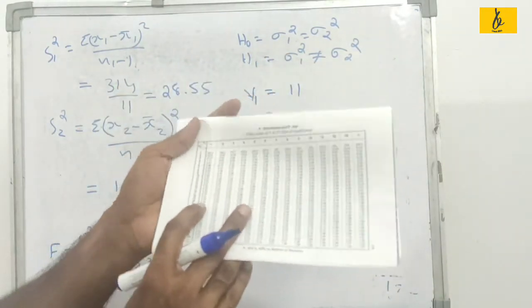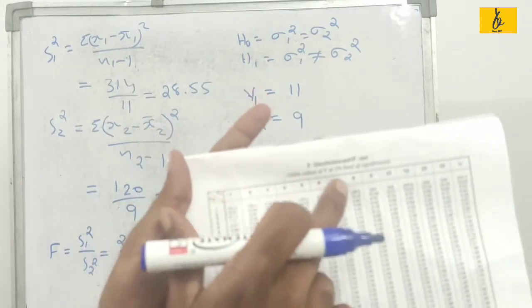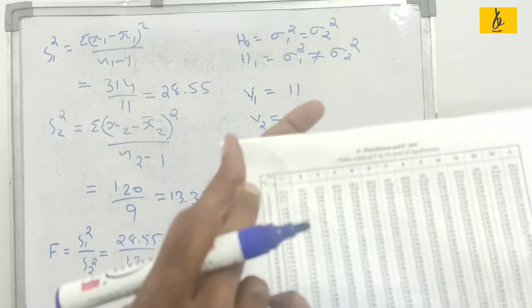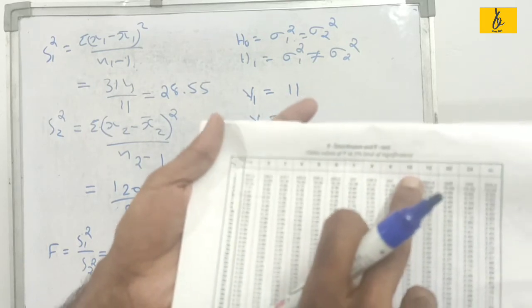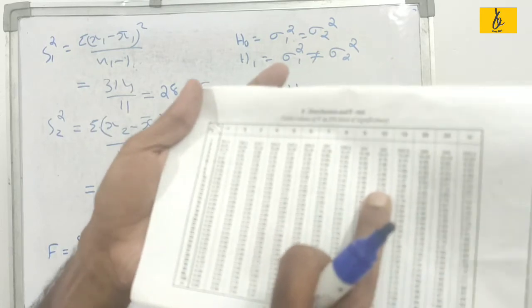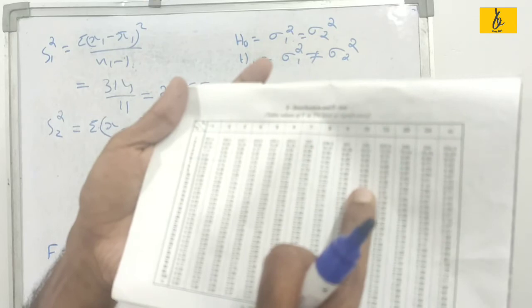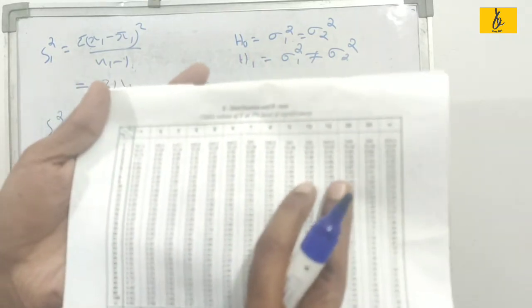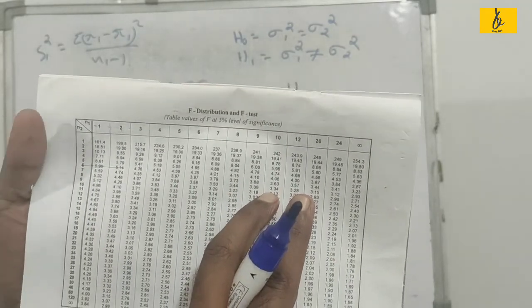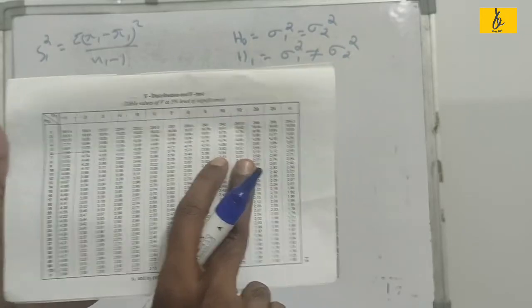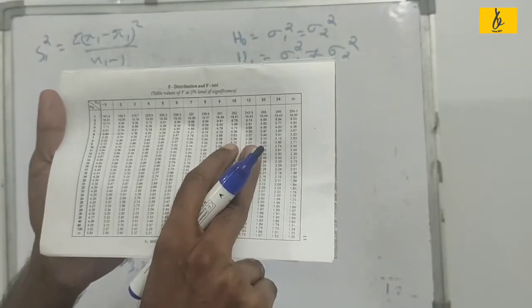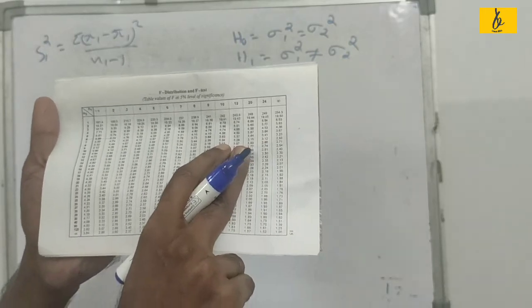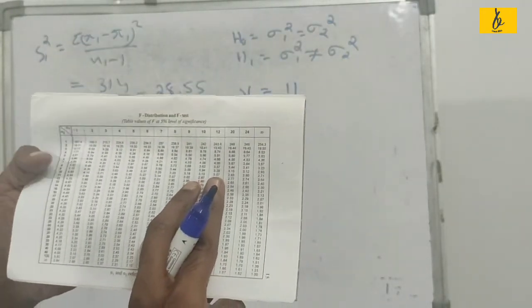We have n1 and n2 values. V1 is 19 and V2 is 19. Looking up the F-table with degrees of freedom 19 and 19, we interpolate: 3.13 plus 3.0 equals 6.2 divided by 2. We compute the table value as approximately 3.1, comparing 22.44 divided by 2.